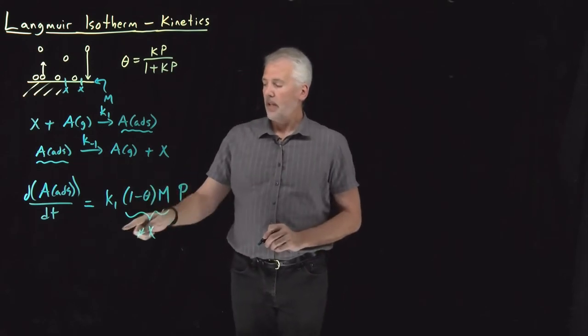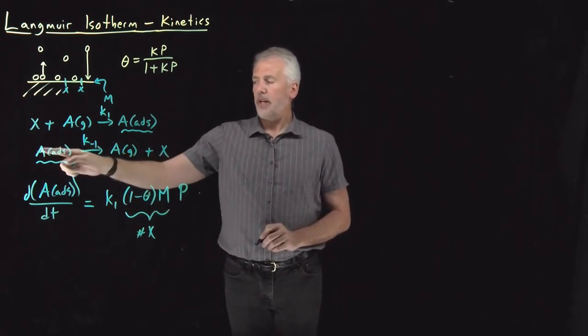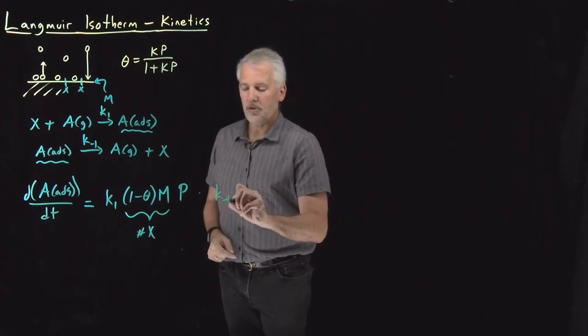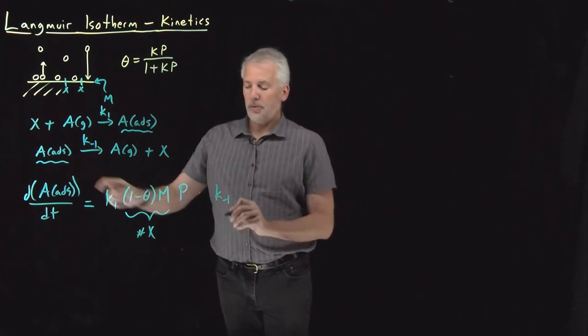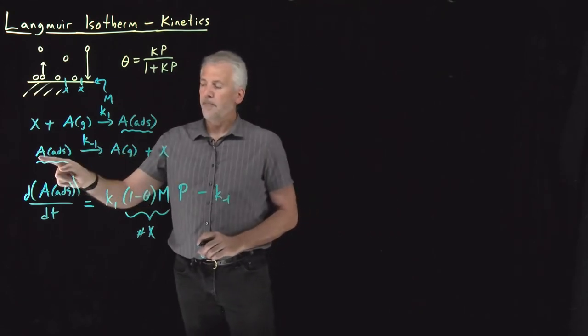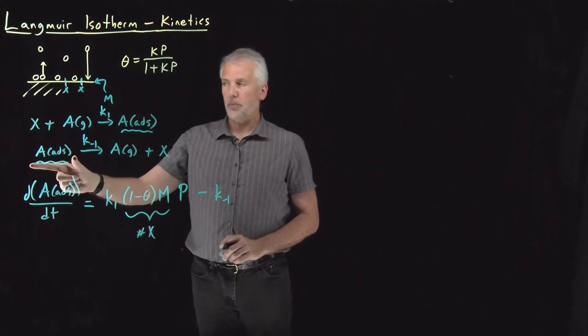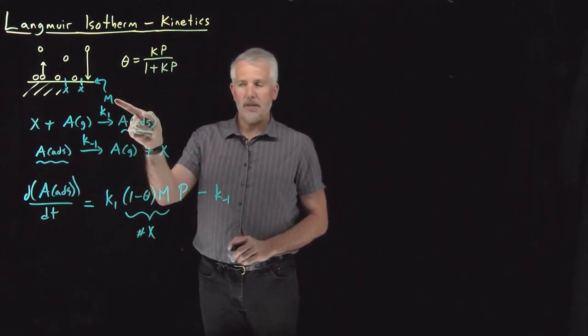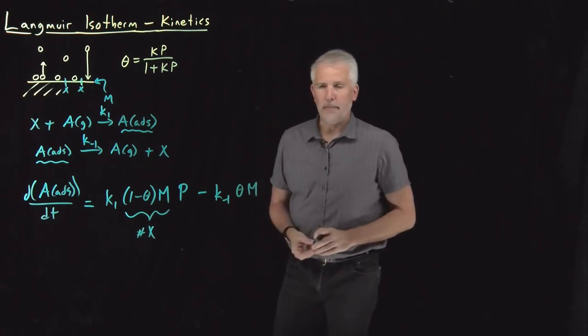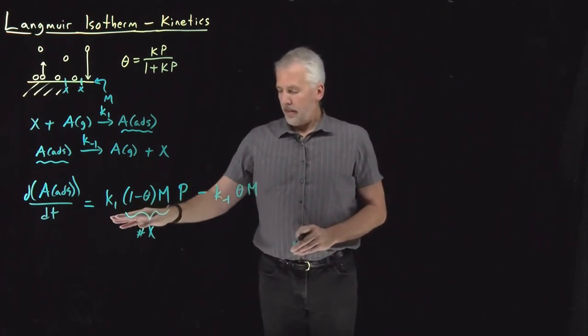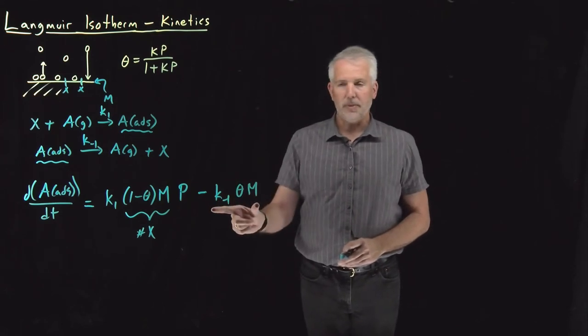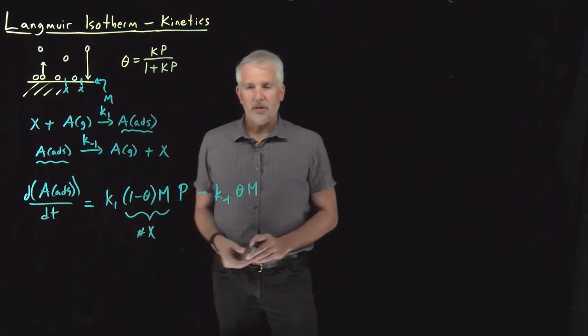In the reverse direction, I need to take account of the rate at which these adsorbed molecules are disappearing when they are used as reactants in the desorption reaction. In this reaction with rate constant k minus 1, I'm losing adsorbed species, so that's going to be a negative contribution to the rate of change of the adsorbed species. The rate constant is k minus 1. The only reactant in this reaction is the number of adsorbed species. Out of a total of m sites, some surface coverage theta is occupied, so the total number of adsorbed species is theta times m. Those two terms combined, the rate at which I'm gaining adsorbed species from the forward reaction minus the rate at which I'm losing adsorbed species from the reverse reaction, tells me the rate of change of the adsorbed species.